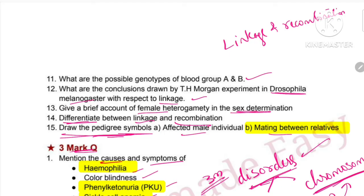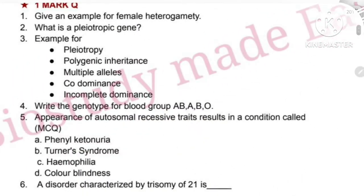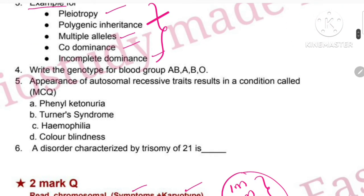Mating between relatives is very important — pedigree symbols are very important. Total pedigree symbols must be noted. Also important for 1-mark: female heterogamety with example, pleiotropic gene with example, polygenic example, multiple alleles co-dominance and incomplete dominance examples — all these examples must be noted. Also note the genotype of each blood group.